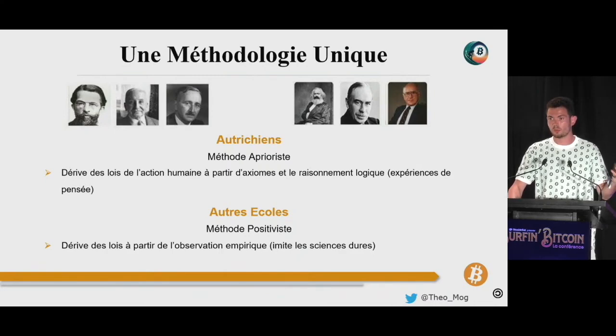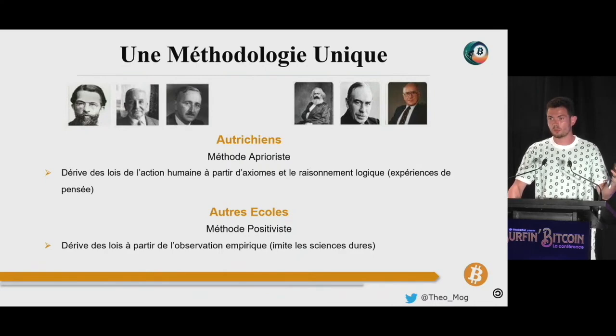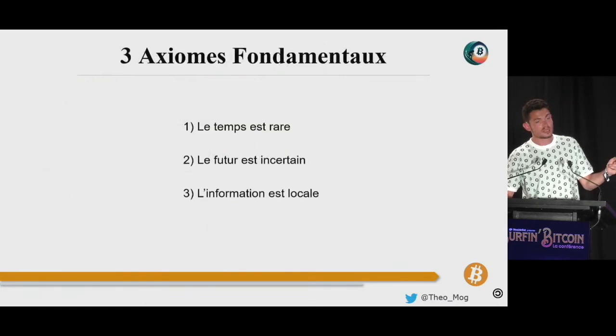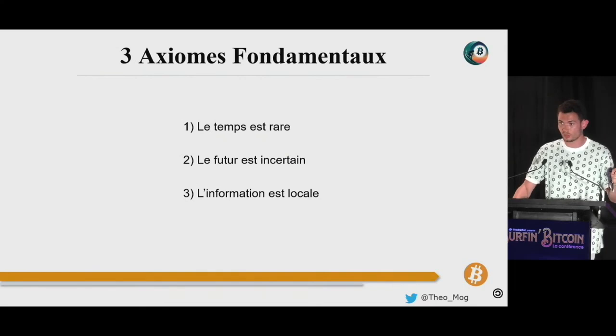Aujourd'hui, j'aimerais vous donner un exemple du type de raisonnement que font les Autrichiens, en partant de seulement 3 axiomes pour parler de la monnaie, des marchés, etc. Ces 3 axiomes sont très simples : le temps est rare, le futur est incertain, et l'information est locale.